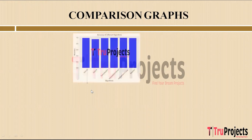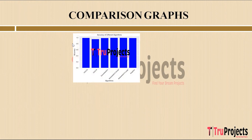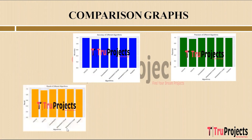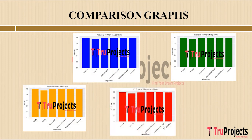Now we'll see the comparison graphs. The first is a bar graph comparing accuracy scores of different algorithms, with algorithm names on the x-axis and accuracy scores on the y-axis. Accuracy measures the overall correctness of predictions. The next graph shows precision scores comparison — precision measures the accuracy of positive predictions indicating how many predicted positives were actually correct. The recall scores comparison graph shows how many actual positives were correctly predicted. The F1 scores comparison graph combines precision and recall into a single metric, balancing accuracy and completeness in predictions.